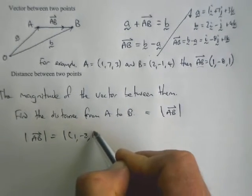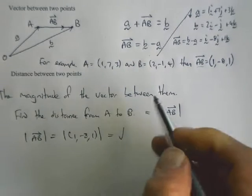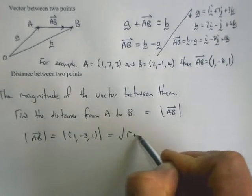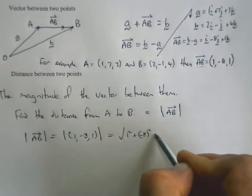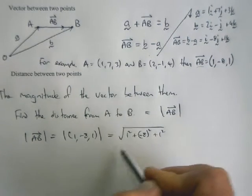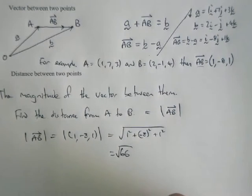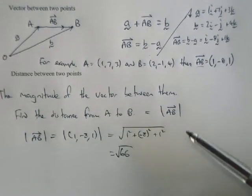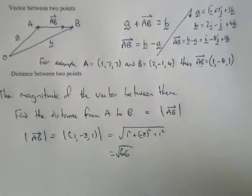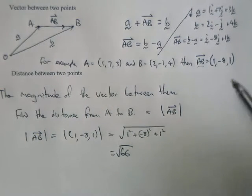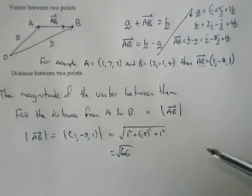The magnitude of vector AB is the magnitude of (1, -8, 1), which is using Pythagoras again: the square root of 1² plus (-8)² plus 1², which equals the square root of 66. So the distance between points A and B is √66.